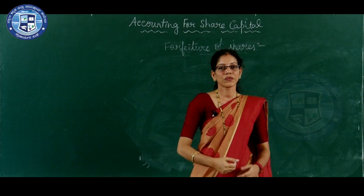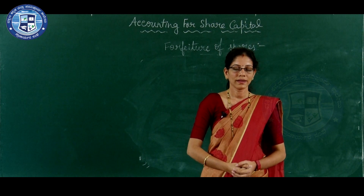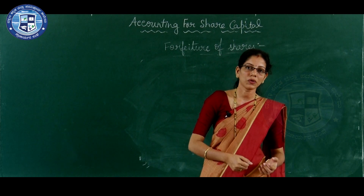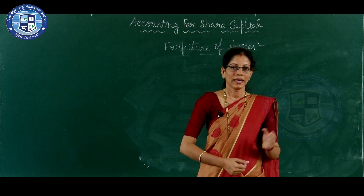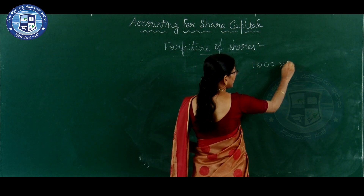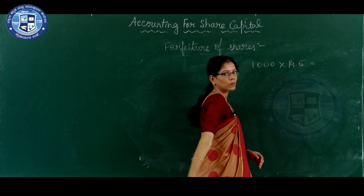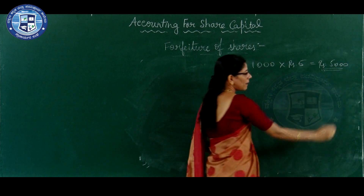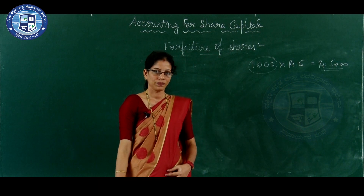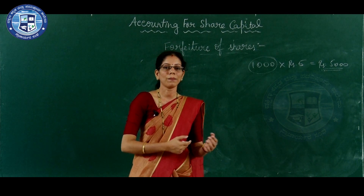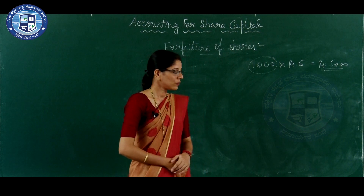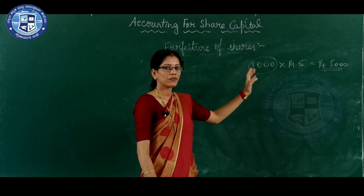Forfeiture of shares means cancellation of the rights of the shareholders for non-payment of allotment money or call money or both. In the previous example, one shareholder having 1,000 shares did not pay rupees 5, so rupees 5,000 is pending. The company has the right to forfeit or cancel these 1,000 shares. After cancelling those shares, the company can reissue them to some other person at a discount.